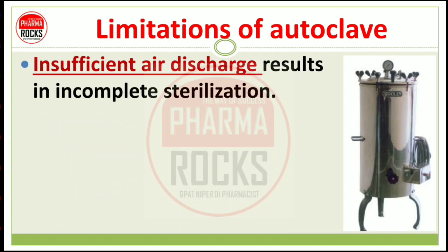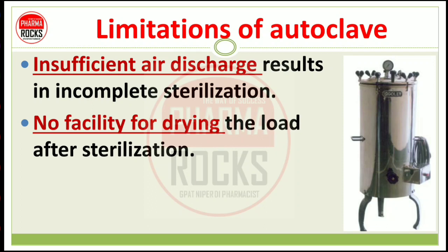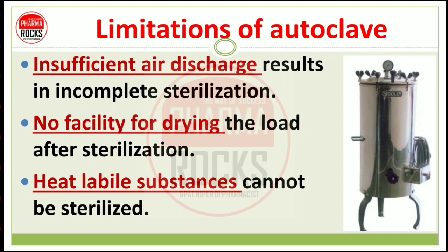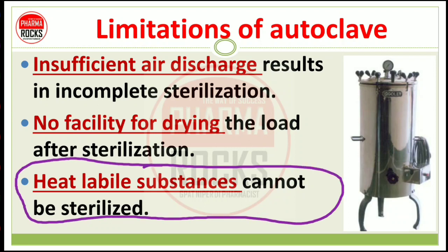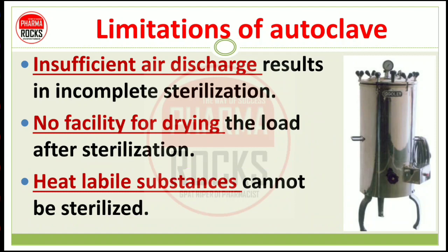What are the limitations of autoclave? Insufficient air discharge results in incomplete sterilization. No facility for drying the load after sterilization — drying ka koi mechanism nahi hai. Heat-labile substances cannot be sterilized — jo thermolabile, heat sensitive material hai usko is technique se sterile nahi kar sakte, because temperature rise hone se article ka decomposition ya degradation hone ke chances hain.